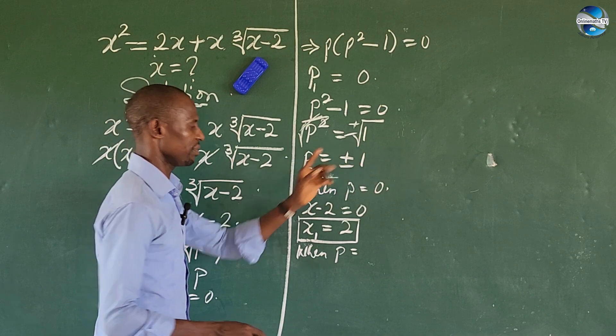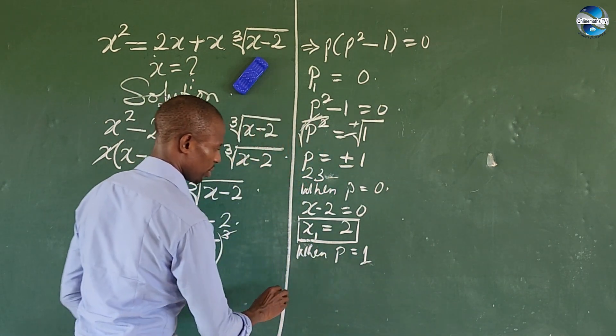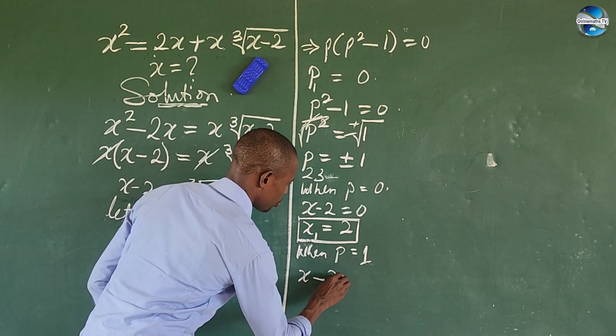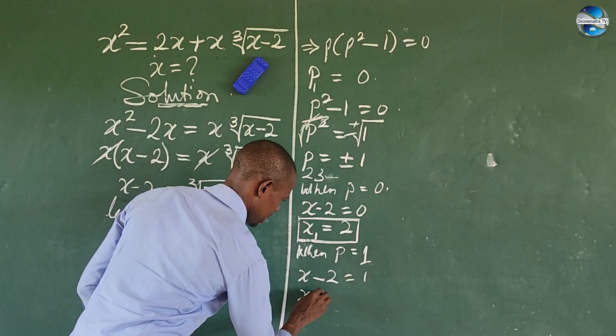Now let's look at the other one. When p equals—let's take the positive part first—so when p equals positive 1, then we're going to have x minus 2 equals 1.